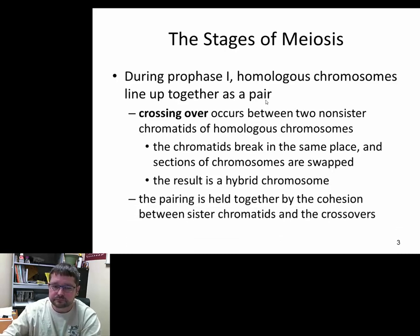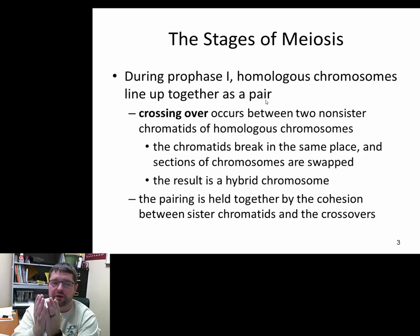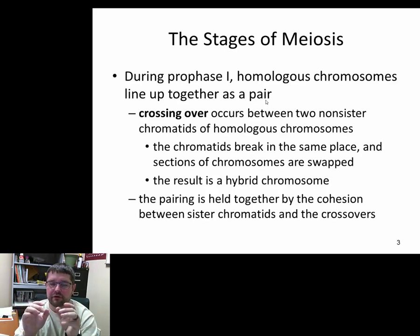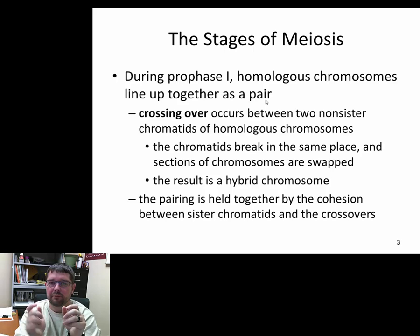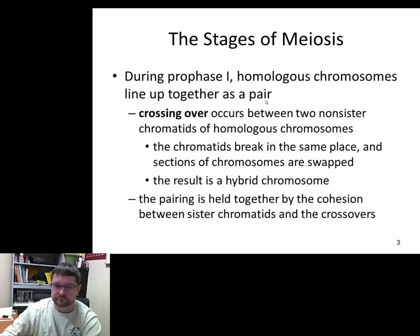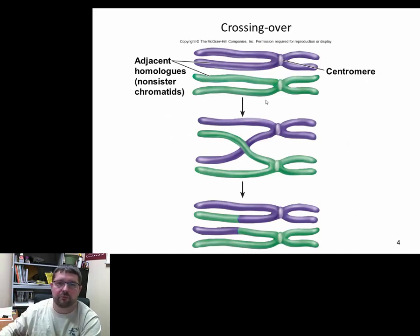Sister chromatids are held together with a centromere, but homologues are not held together with a centromere — rather they're held together with cohesion, the attraction of water molecules. This cohesion is enough attraction to result in this hybridization of chromosomes, the breaking of chromosome linkages, and swapping of material.